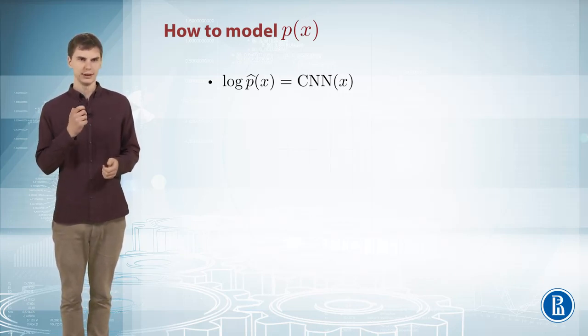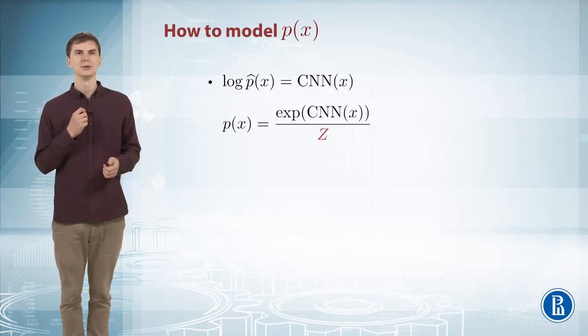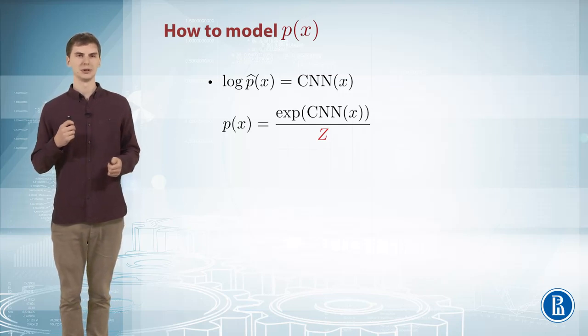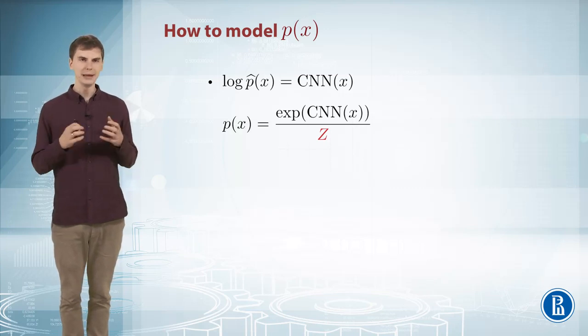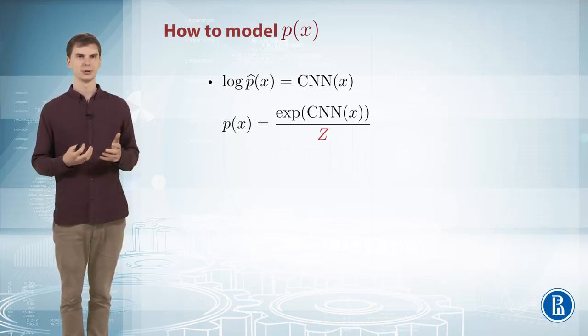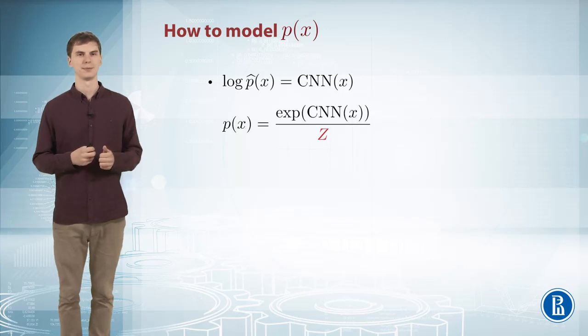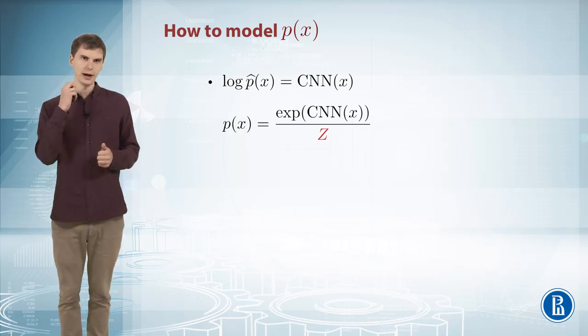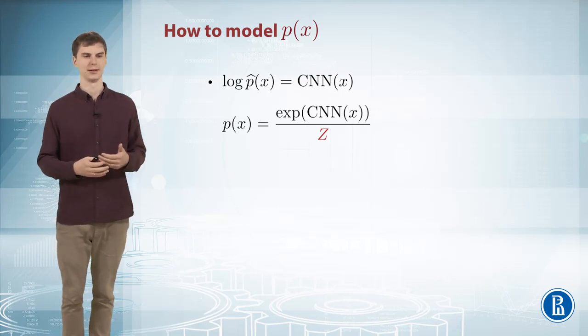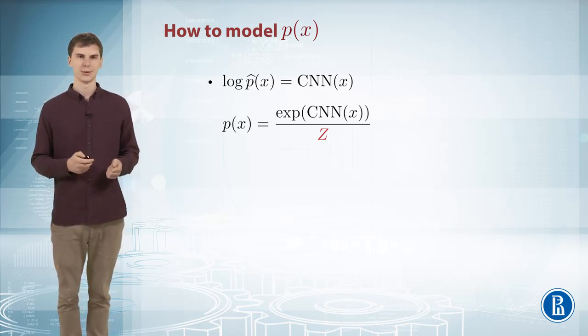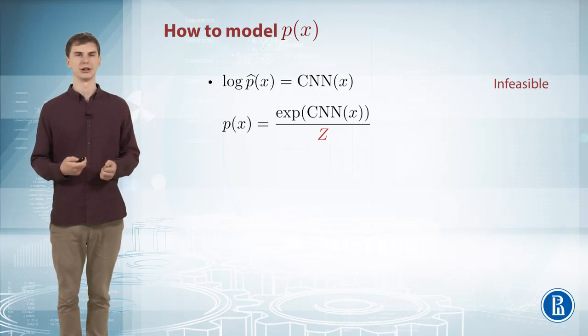The problem with this approach is you have to normalize your distribution. You have to make your distribution sum to one with respect to all possible images in the world. There are billions of them. This normalization constant is very expensive to compute, and you have to compute it to do training or inference properly. So this is infeasible. You can't do that because of the normalization.